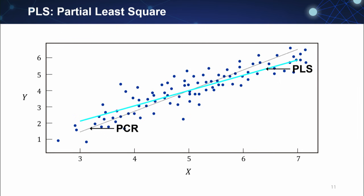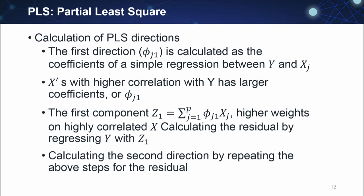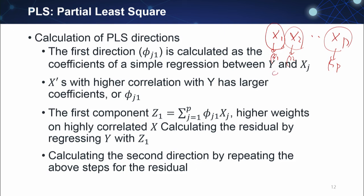Here is a simple illustration. PLS may result in something similar to PCR but a little bit different. The detailed calculation of PLS is as follows. First, we apply simple linear regression for each of x1, x2, and xp separately, and calculate the coefficient — phi 1, phi 2, and so on. If all axes are standardized to the same scale, meaning zero mean and variance 1, then x with higher correlation with y will have a higher coefficient.